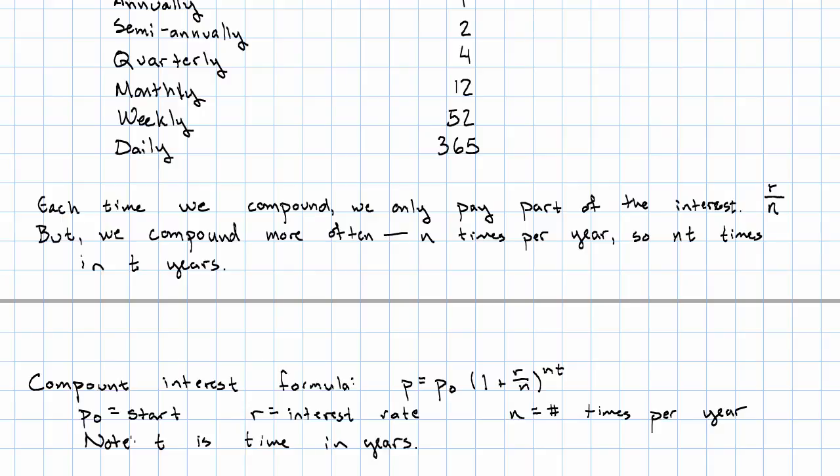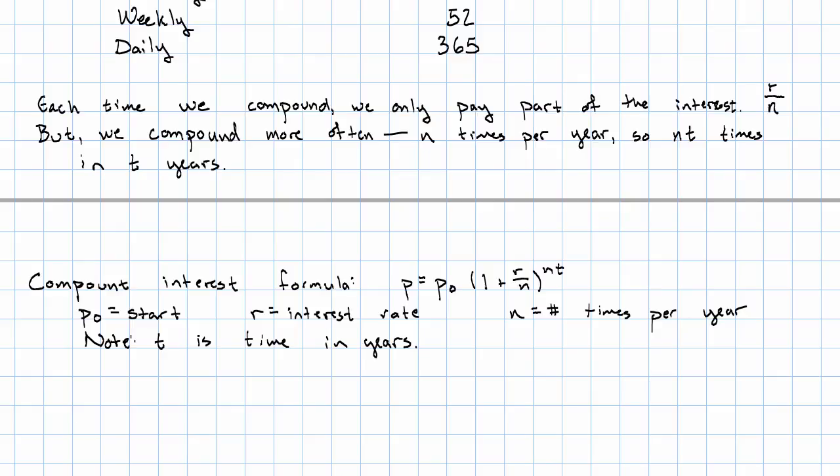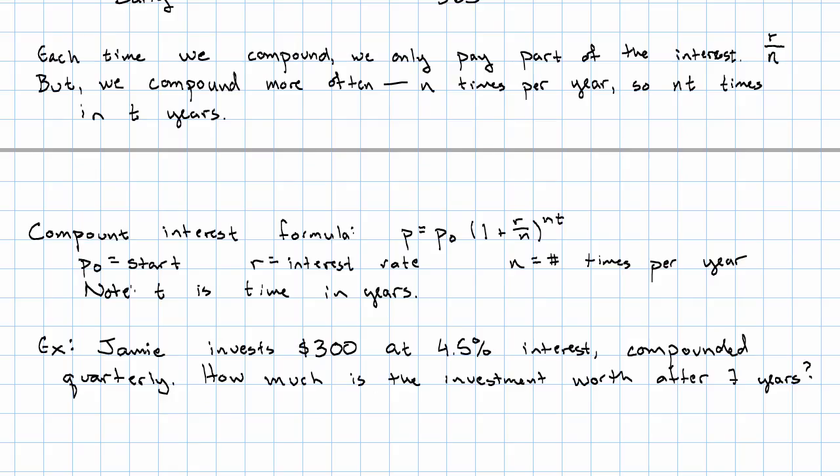If we're given time in something other than years, we'll have to convert it. So just as a quick example, Jamie invests $300 at 4.5% interest compounded quarterly. How much is the investment worth after seven years? We want to know the final amount. The starting amount is $300. We'll multiply that by one plus 4.5% is 0.045. Quarterly means four times per year. Four times per year for seven years is four times seven times.